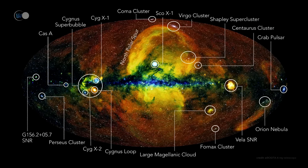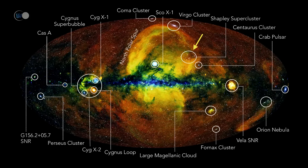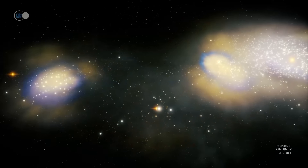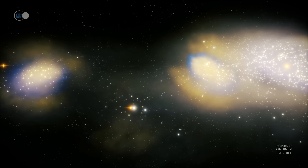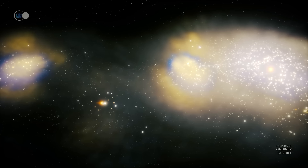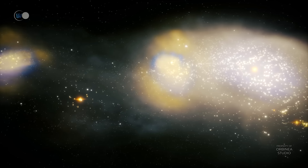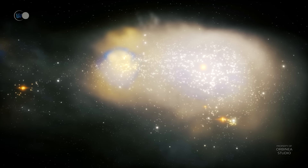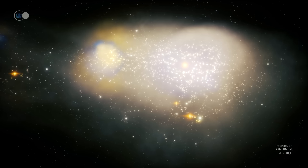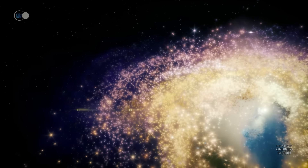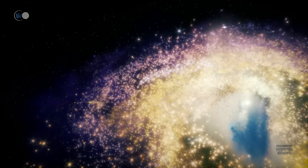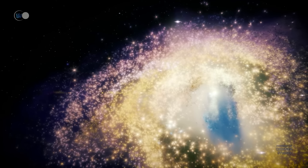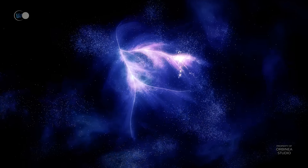The Shapley Supercluster is located in the Centaurus constellation, 650 million light years away behind the Centaurus Supercluster. It contains 25 galaxy clusters condensed into an area the size of the Virgo Supercluster, which contains just one large galaxy cluster. In 1936, American astrophysicist Harlow Shapley estimated that 76,000 galaxies were concentrated in this region — a discovery that led to the later identification of the Shapley Supercluster, which was fittingly named after him.